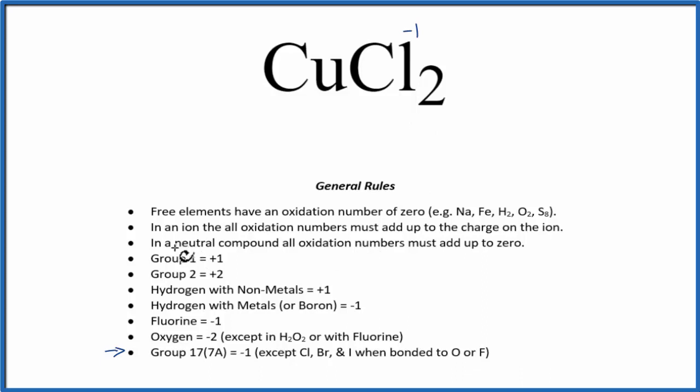We also note that in a neutral compound, and this is a neutral compound because we don't have an overall plus or minus charge like we have with ions. In a neutral compound, all the oxidation numbers add up to zero. So we could make a statement like this.